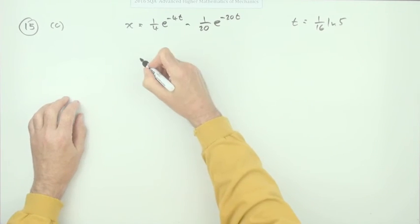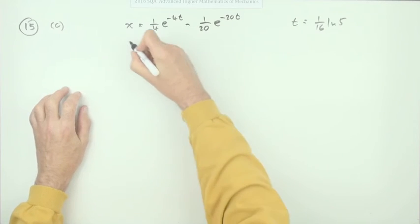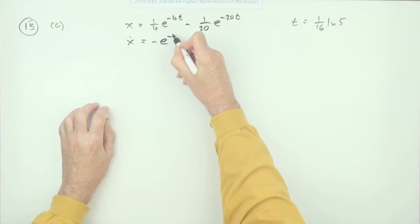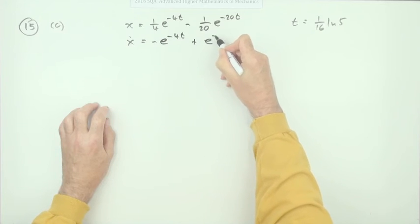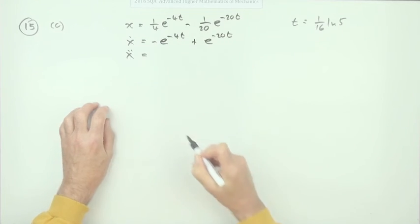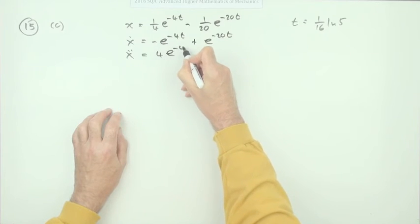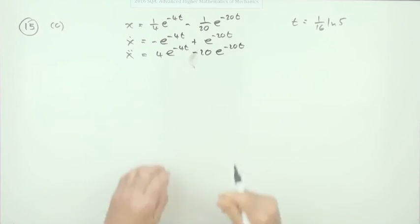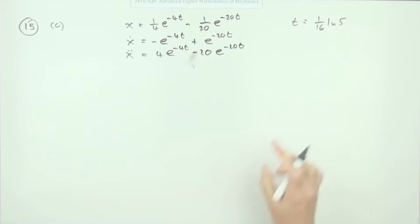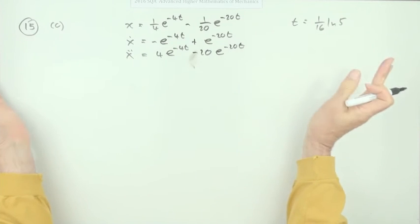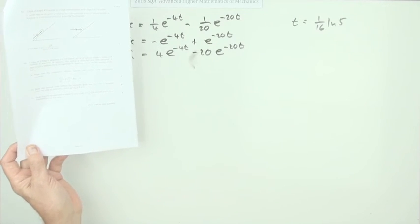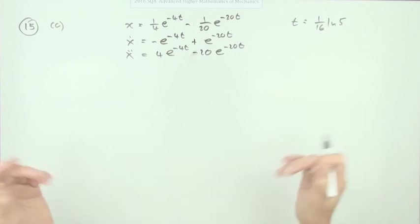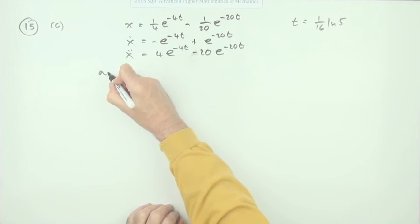Differentiating once: ẋ = −e^(−4t) + e^(−20t). Differentiating again for the acceleration: ẍ = 4e^(−4t) − 20e^(−20t). Setting the acceleration equal to zero: 4e^(−4t) − 20e^(−20t) = 0. You could substitute the given value of t directly to show the result is zero.